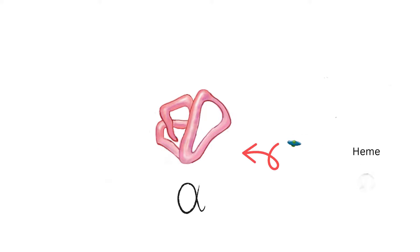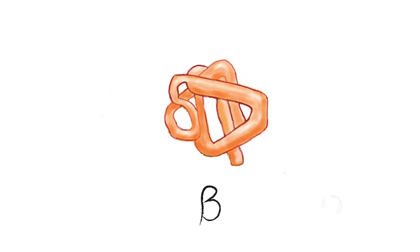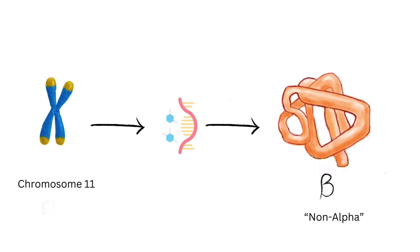Heme fits into the hydrophobic cleft of the alpha globin chain, forming a heme-plus-alpha monomer. Beta globin chain is made from instructions from the genes in chromosome 11, forming a beta globin or non-alpha globin chain produced in roughly equal amounts — otherwise you get a thalassemia, which we will see in another video.